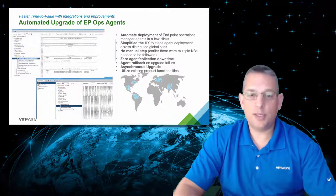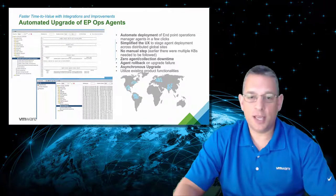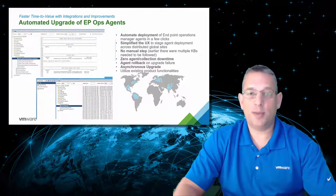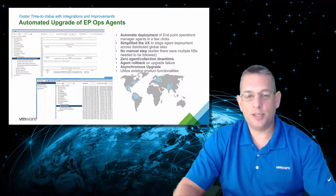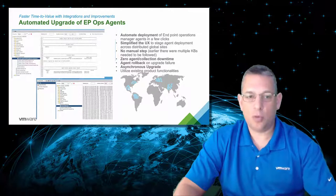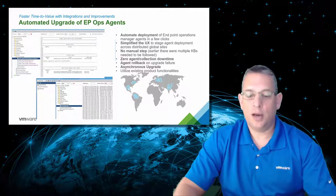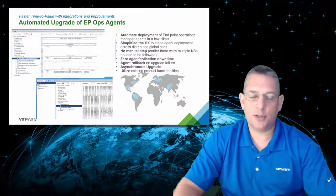One of the favorite improvements is the ability to automate the update of Endpoint Operations Agents, or EPOps. This removes the manual process of updating agents, saving administrators time and the business money. There is zero agent collection downtime, and there is also the ability to roll back the agent in the event the update fails for any reason. This makes updating agents a much simpler and more automated process, ensuring all your VMs have the latest up-to-date agent.